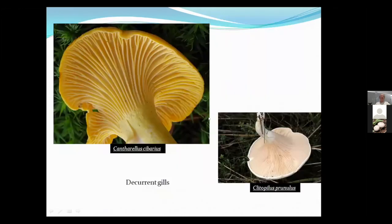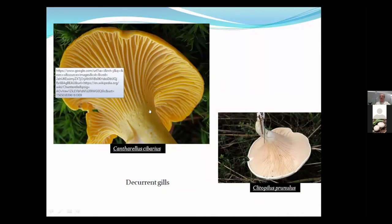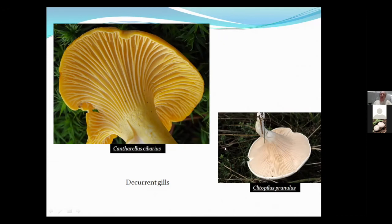Here's a chanterelle with gills running down the stalk, and a pink-spored Clitopilus also with decurrent gills running down the stalk. Looking at these mushrooms from the side, you can get a pinkish cast to identify that the spores are pink in this case.